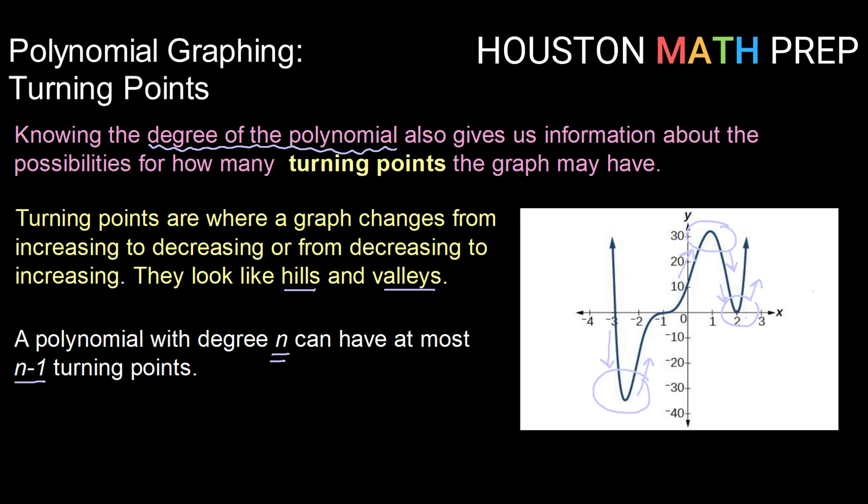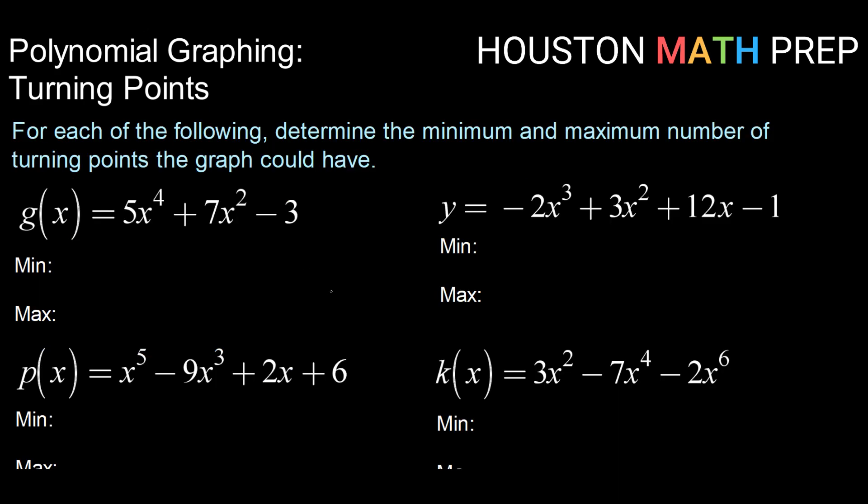So now that we know what turning points look like on a graph, let's see if we can identify how many a particular polynomial might have. For each of the following, determine the minimum and maximum number of turning points the graph could have.